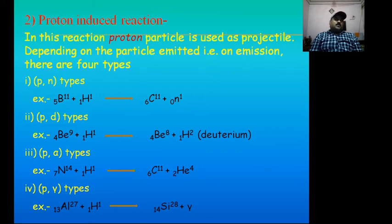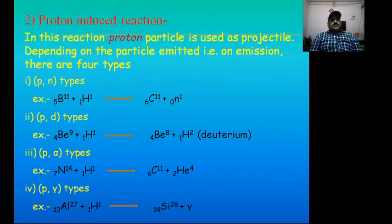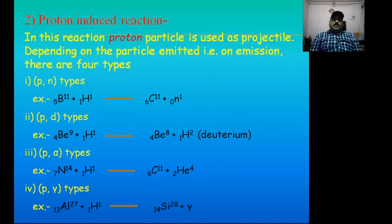Example of proton-neutron type: Boron-11 plus proton as projectile gives C-11 and neutron. Similarly, for the fourth type, proton-gamma ray type: Aluminum-27 plus proton gives Silicon-28 and gamma ray as ejectile emission.